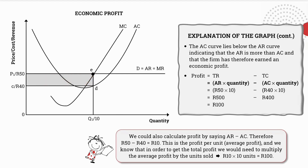Now we're going to calculate the economic profit. There are two methods. The first method: total revenue minus total costs. Total revenue equals average revenue times quantity, so 50 rand × 10 = 500 rand. Total costs equals 40 rand × 10 = 400 rand. Therefore economic profit is 100 rand. The second method: average revenue minus average costs, multiplied by quantity — so 50 rand minus 40 rand equals 10 rand, times 10 equals 100 rand.